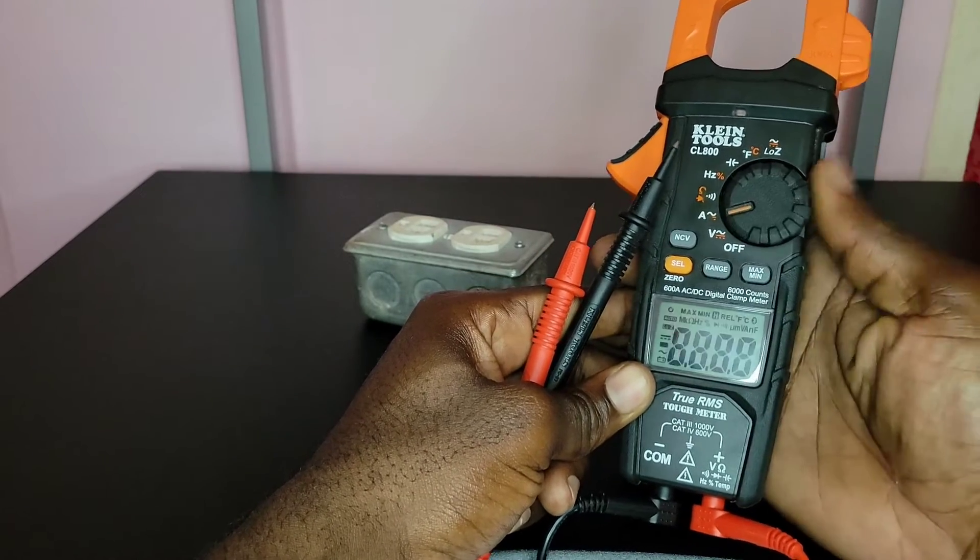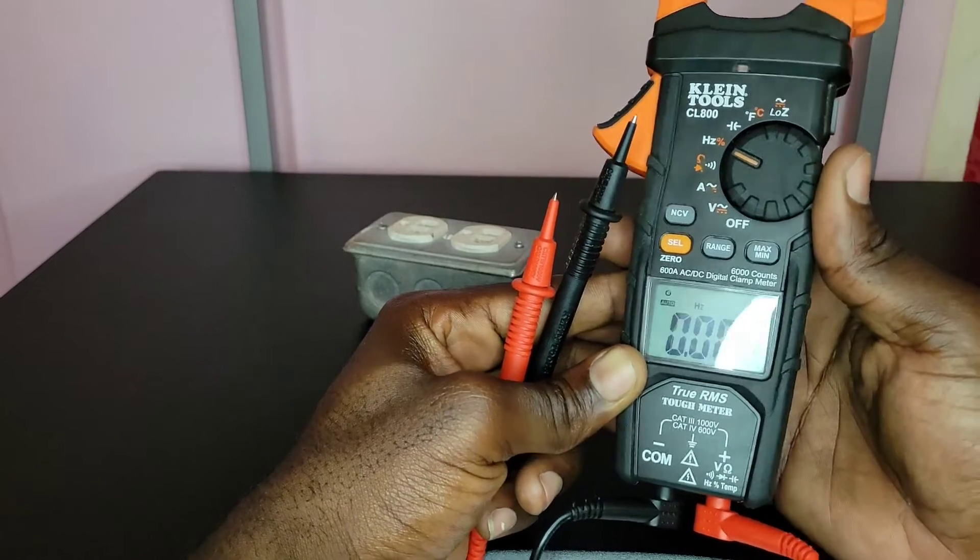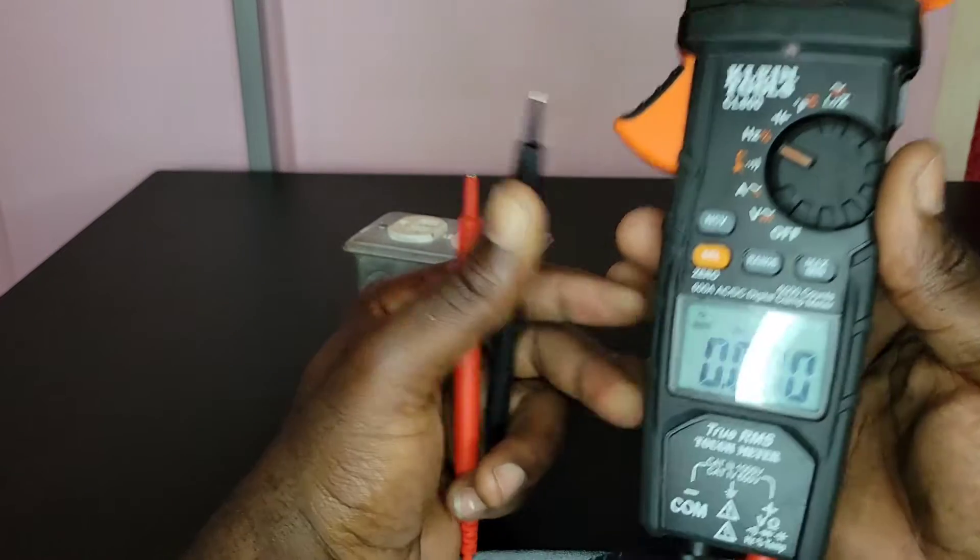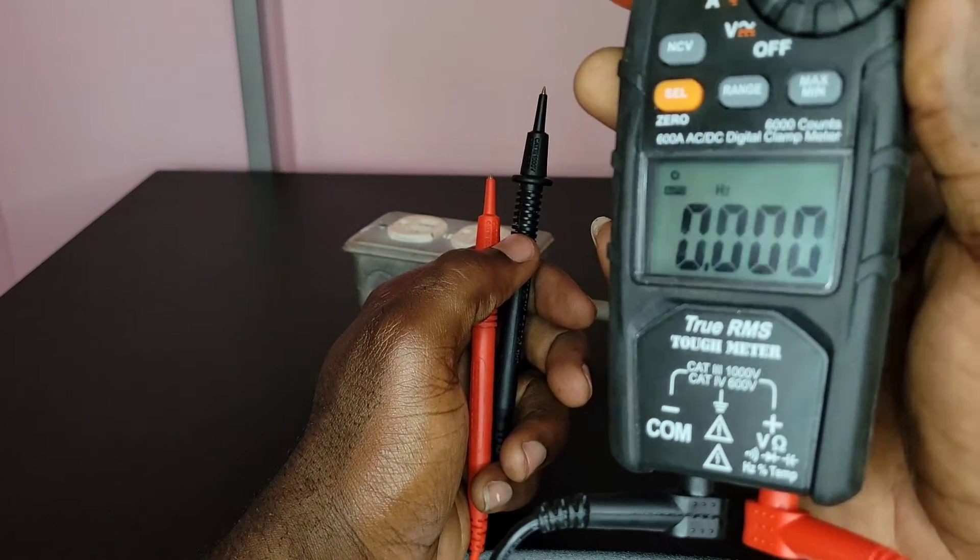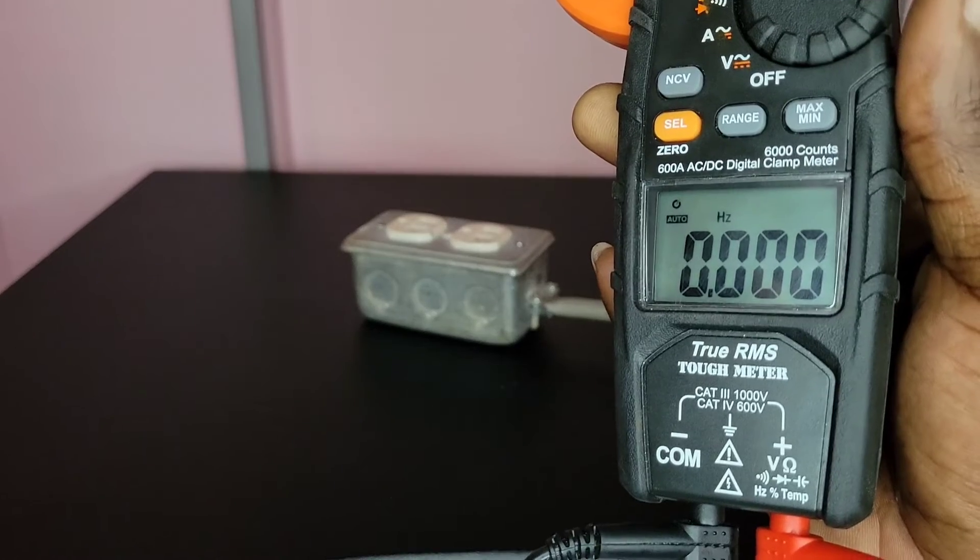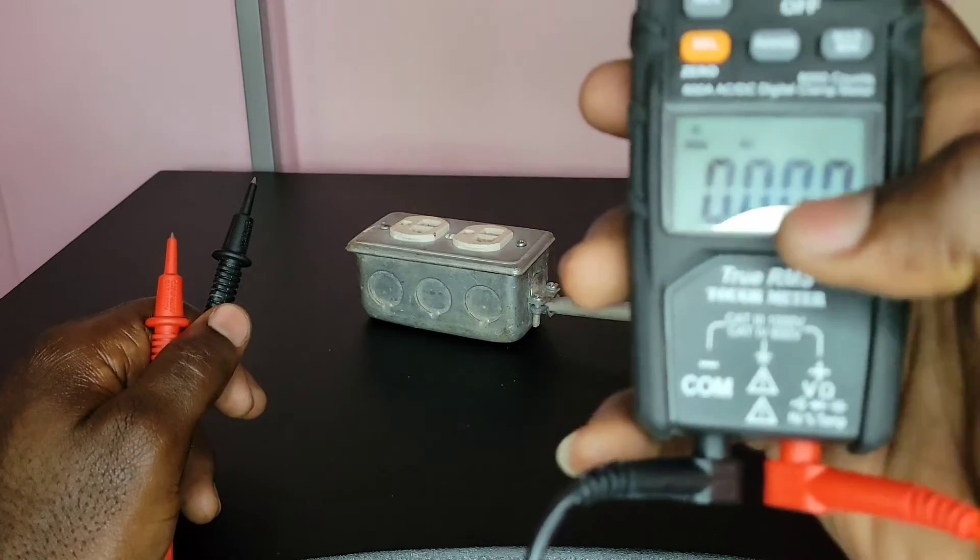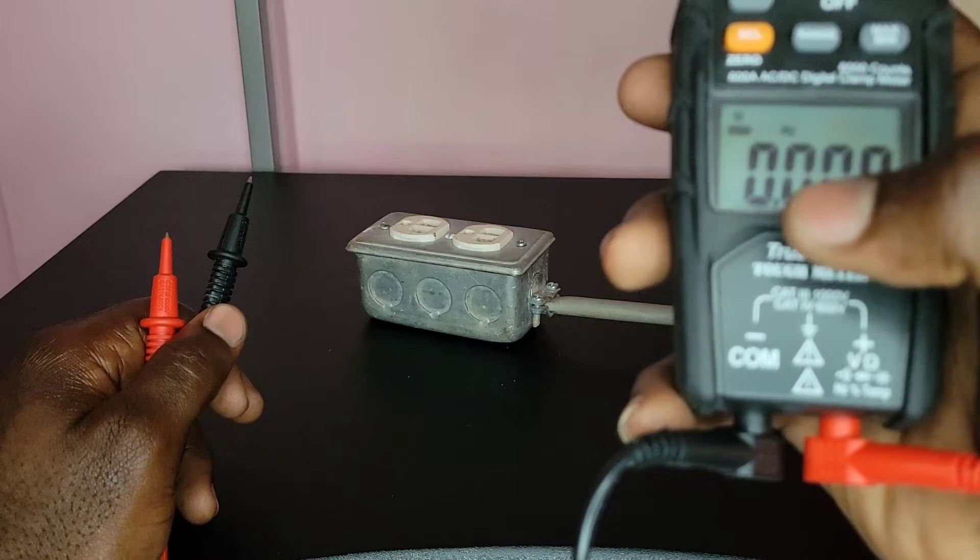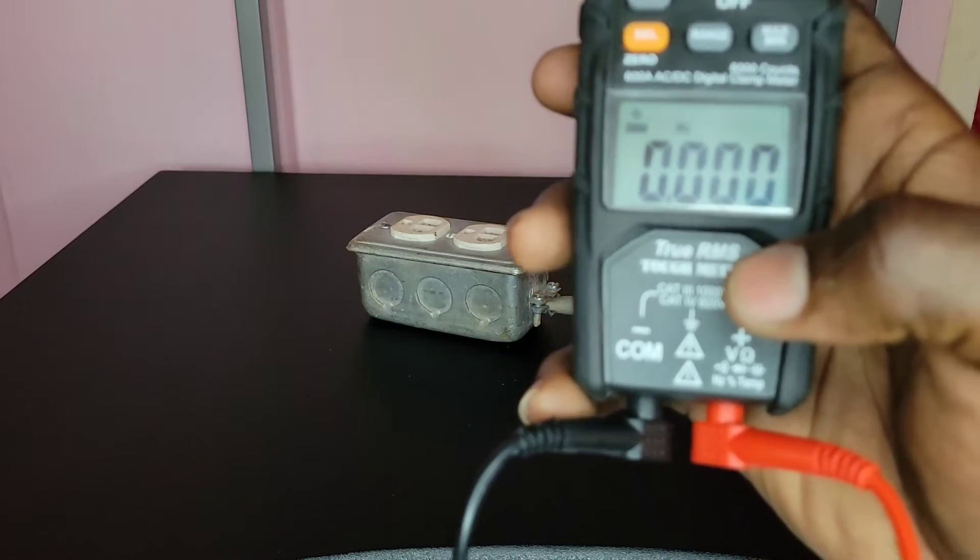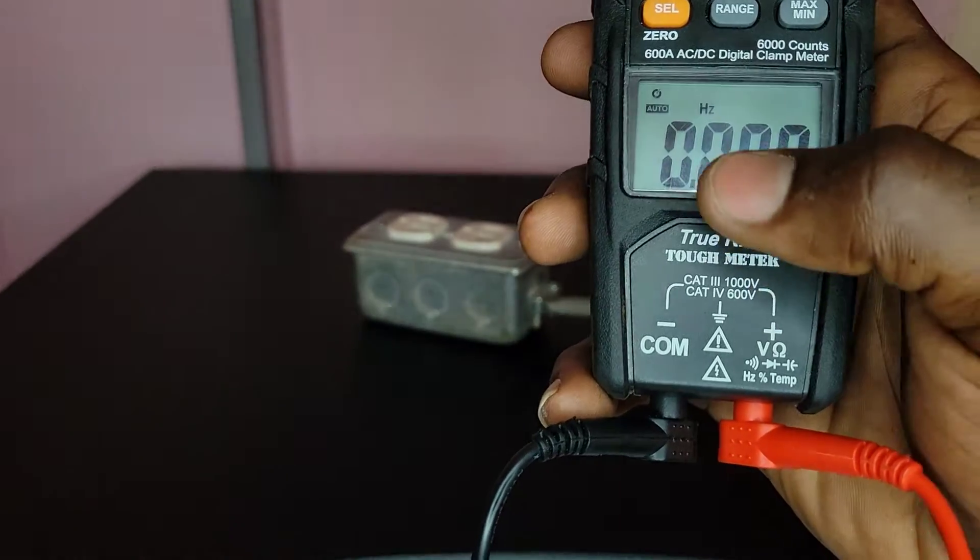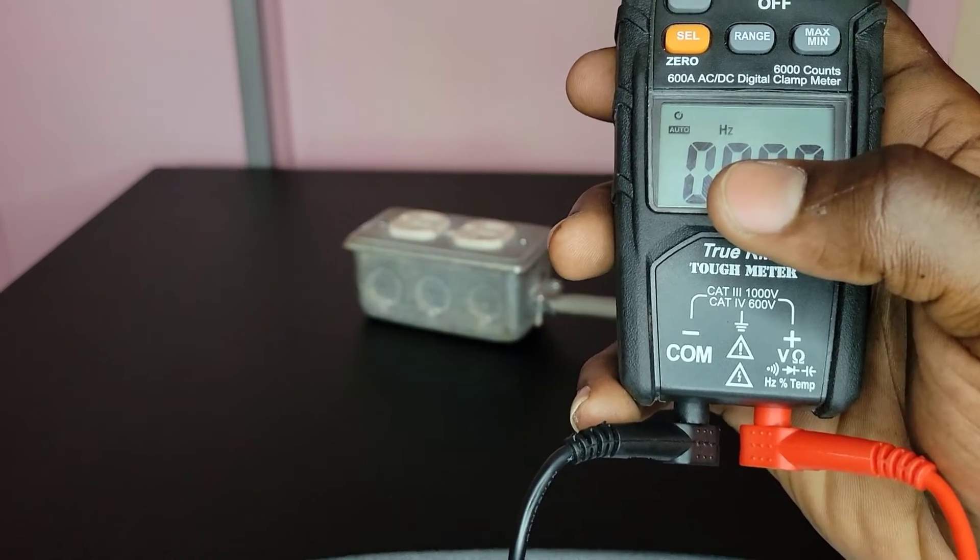Next we will find our frequency settings. This is it right there for frequency. As you can see, you'll see the Hz symbol right there. That's Hertz, and that is the unit for frequency.